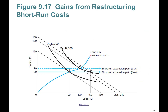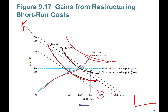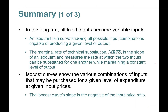The short-run expansion path is a horizontal line showing cost-minimizing input combinations for various output levels when capital is fixed. On a capital-labor graph, the long-run expansion path connects optimal points E and F across isoquants for 10,000 and 12,000 units. In the short run, capital is fixed — say at 70 units — so the short-run expansion path is horizontal: you can only increase production by hiring more labor. That's the key distinction between short-run and long-run expansion paths.